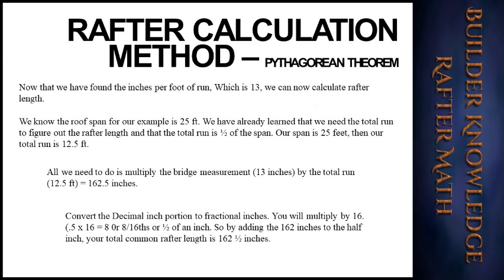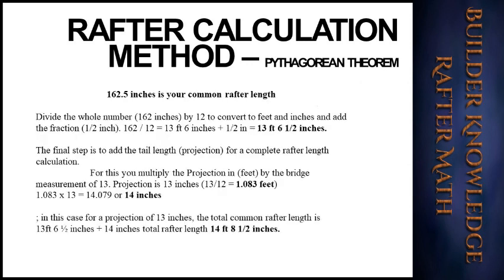All we need to do is multiply the bridge measurement of 13 inches by the total run of 12.5 feet, which equals 162.5 inches. Next, convert the decimal inch portion to fractional inches by multiplying 0.5 × 16, which equals 8 sixteenths, or one half of an inch. Adding the 162 inches to the half inch, your total common rafter length is 162 and a half inches. Divide 162 by 12 to convert to feet and inches, then add the half inch: 162 ÷ 12 = 13 feet 6 inches, plus one half inch equals 13 feet 6 and a half inches.